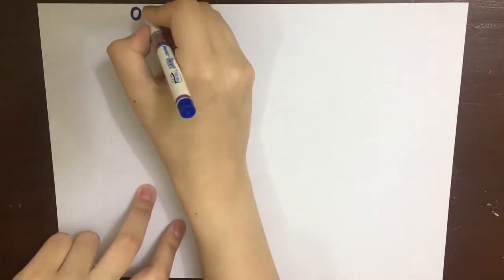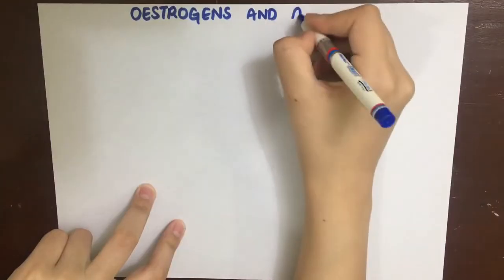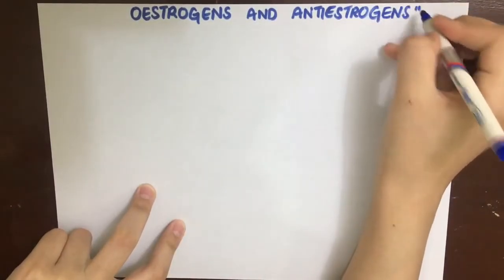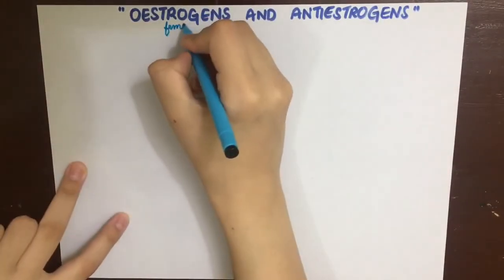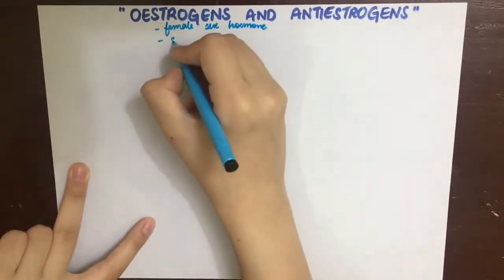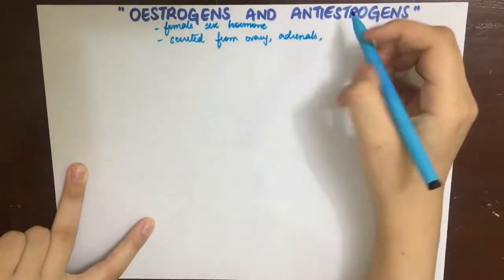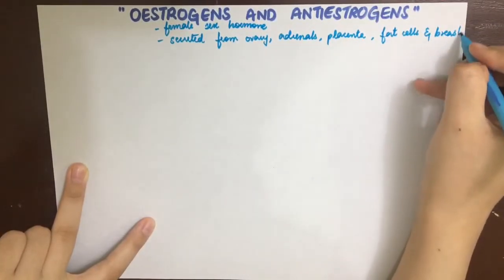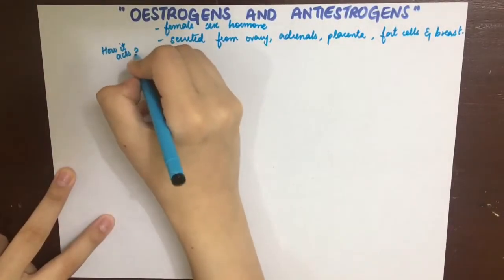In this lecture we'll talk about estrogens and anti-estrogens. Estrogen is a naturally occurring female reproductive hormone which is mainly secreted from the ovaries, the adrenal glands, placenta, and to some extent from fat cells and breast tissue. Estrogen has a wide variety of functions, and how it acts is by binding to the nuclear receptors and regulating protein synthesis, like all steroid hormones do.